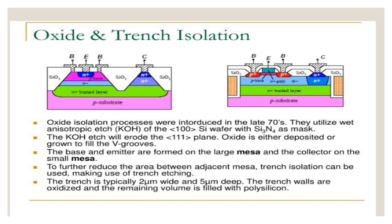To further reduce the area, trench isolation can be used making use of trench etching. The trench is typically 2 micrometers wide and 5 micrometers deep. The trench walls are oxidized and the remaining volume is filled with polysilicon.